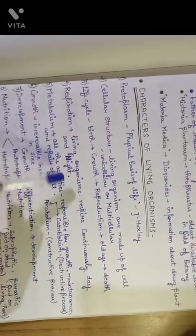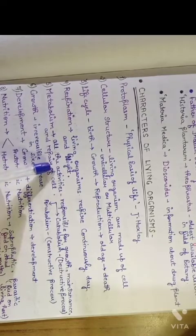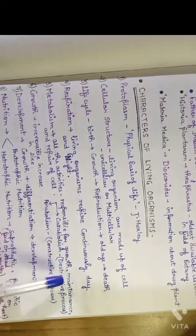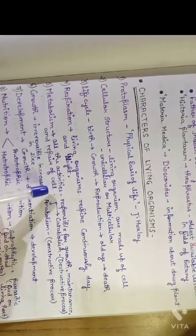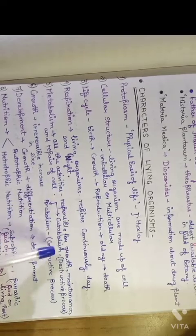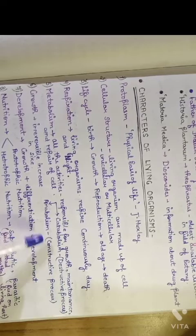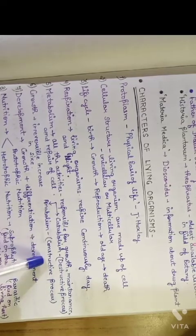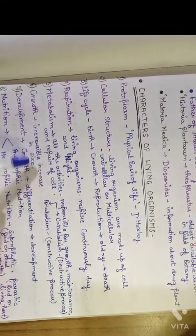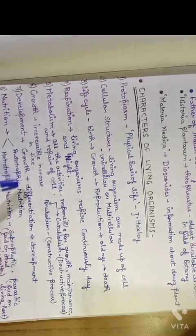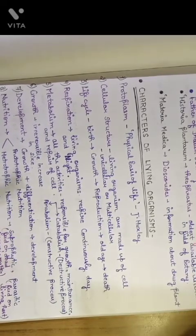Respiration - living organisms respire continuously day and night. Metabolism - all the activities responsible for growth, maintenance, and repair of cell. There are two types of metabolism: catabolism and anabolism. Catabolism is known as destructive process and anabolism is known as constructive process. Growth is the irreversible increase in size. Development - growth plus differentiation is known as development.